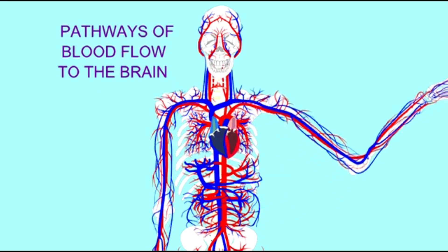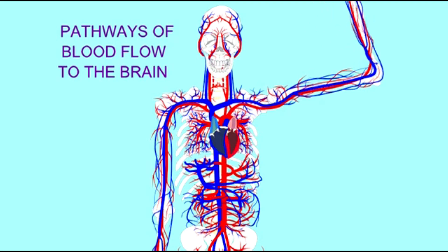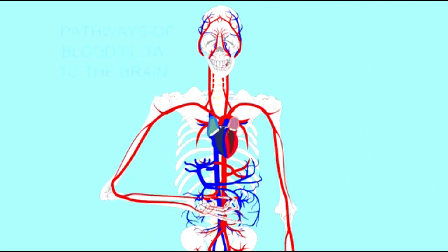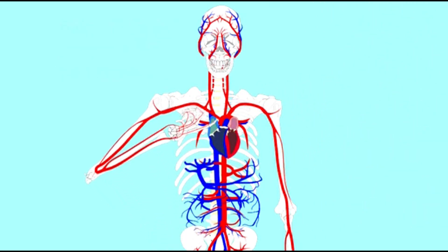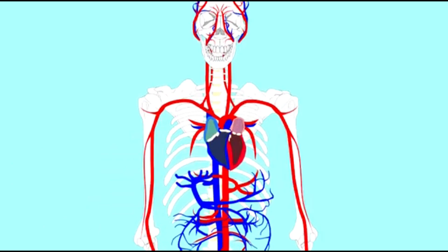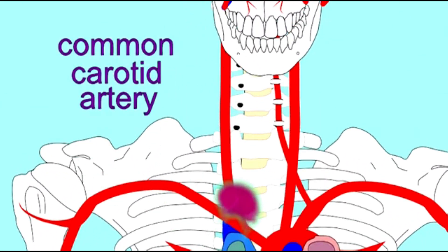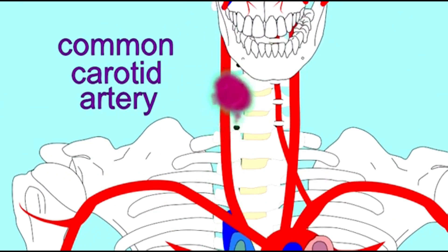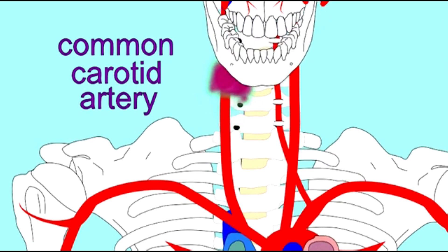Just for the record, another name for the brachiocephalic trunk or brachiocephalic artery is the innominate artery, which translates as the unnamed artery. I find it a little silly that the name of the artery is the unnamed artery, so I tend to use brachiocephalic trunk in my classes.